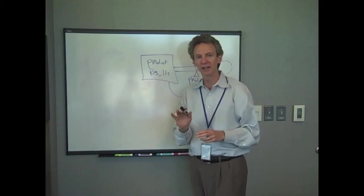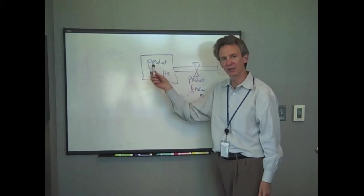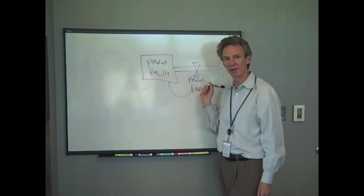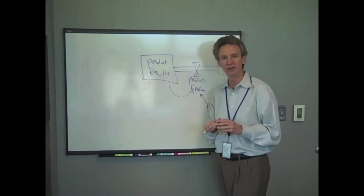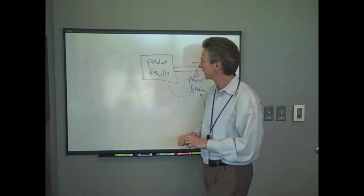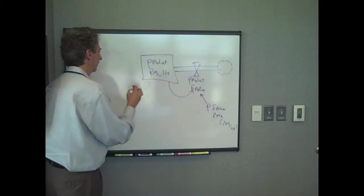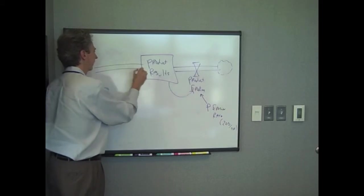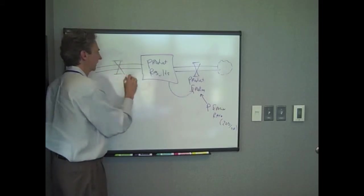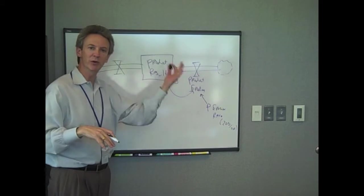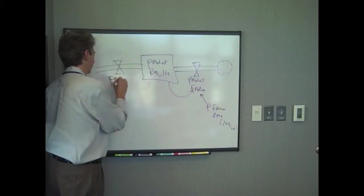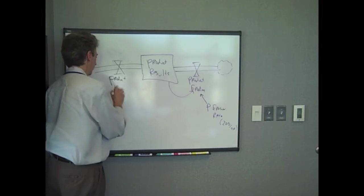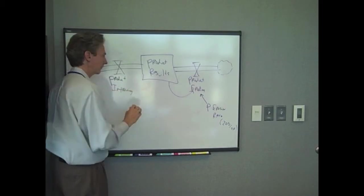So what we are going to do in this video is we have the product results eroding. So we did that part of the model and now we are going to have the product results improving due to management attention. So what we will do over here is we have a flow into the results, something that improves the results, add to the results called the product improving.